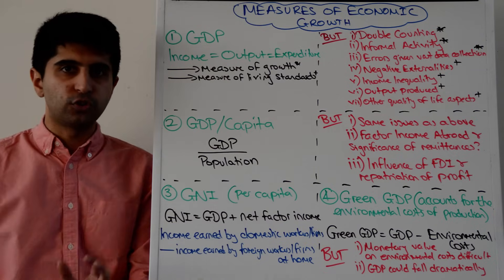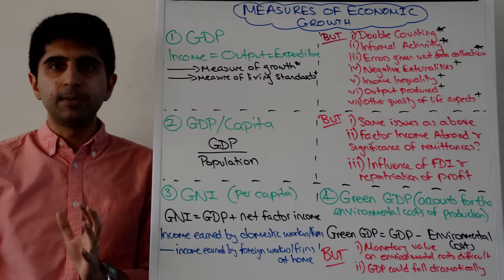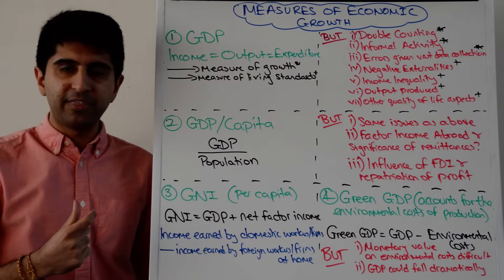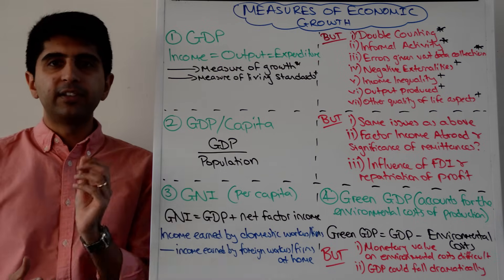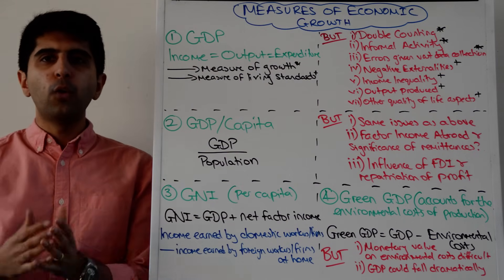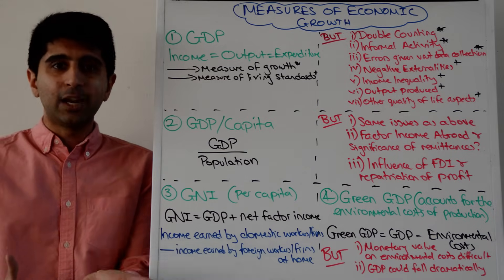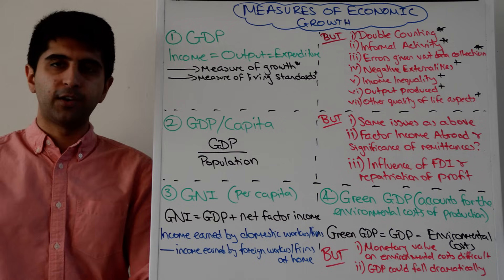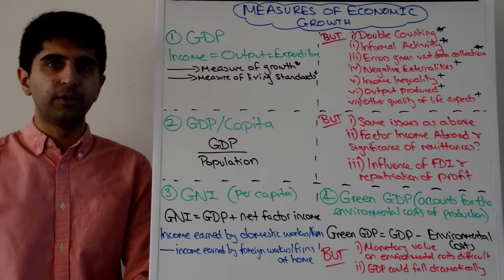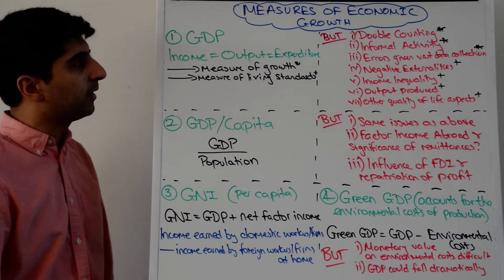Now let's understand the key issues with using GDP as a measure of growth. There are three problems using GDP as a measure of growth, and using GDP as a measure of living standards. First of all, there is a risk of double counting, especially if the output method is being used. Double counting is when we include the value of output in the primary sector, and then include it again when that primary commodity has been manufactured into something in the secondary sector. By including it twice, we might be double counting that output, which can inflate the final GDP figure. However, looking at the final value of all goods and services can overcome this double counting issue.